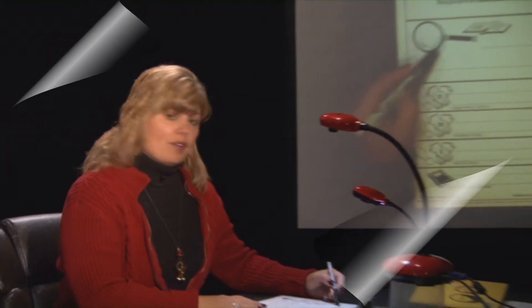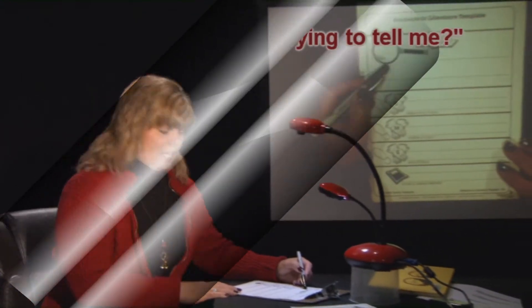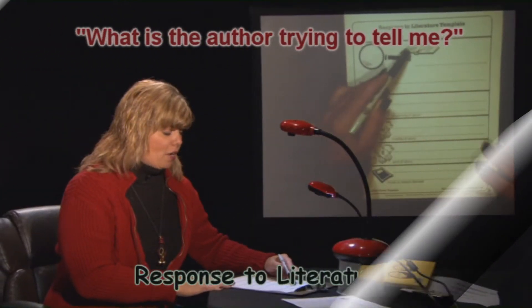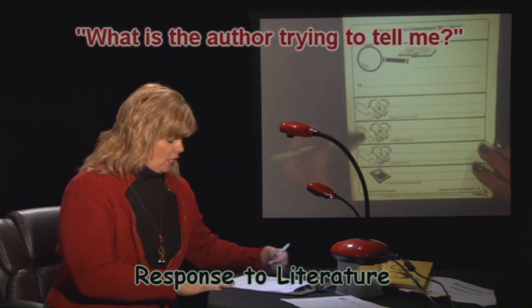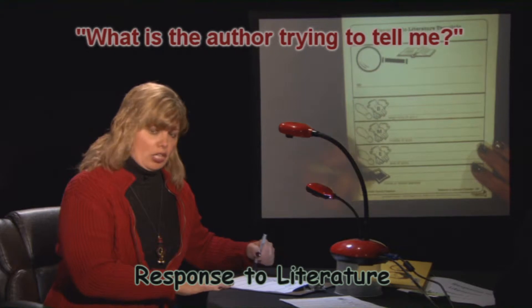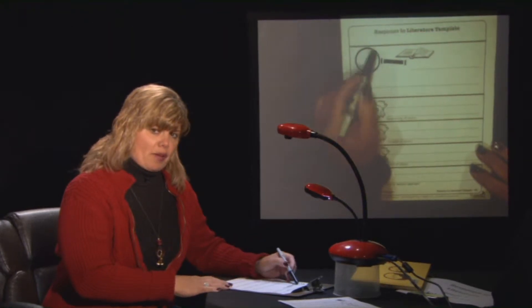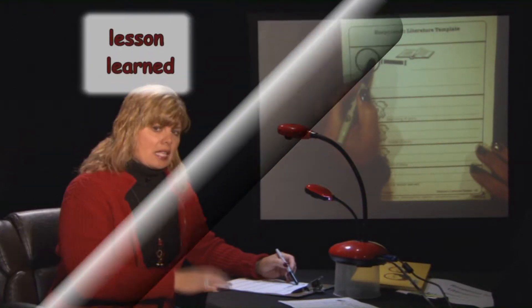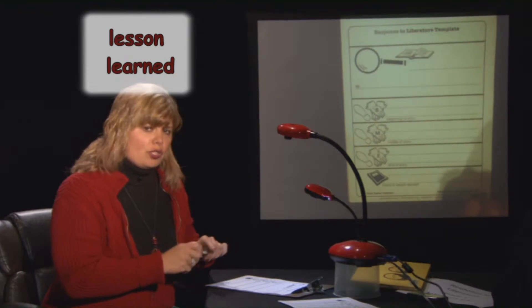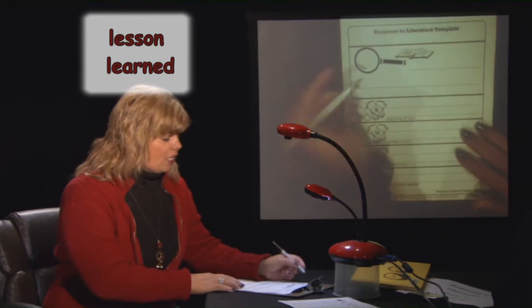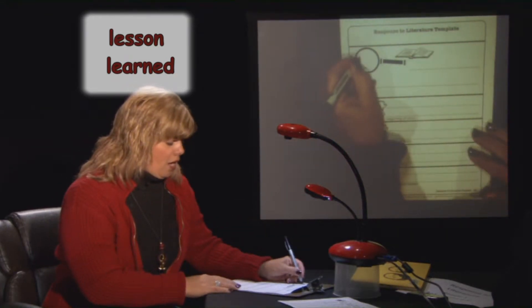The second part of a response to lit is using our template. We're going to find our magnifying glass, our book, our character qualities, our transition words, and our lesson learned. Let's start with our magnifying glass — that's the lesson that George is learning. What is George learning? He's learning to be honest.